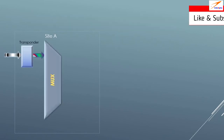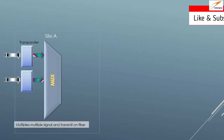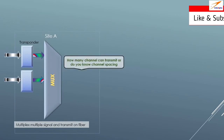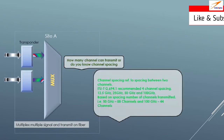After the transponder, the signal goes to a multiplexer. Similarly, we can connect more transponders and send signals to a single multiplexer. A multiplexer's job is to combine all the signals together and transmit on a fiber. The question may ask how many channels can be transmitted and what channel spacing is. Channel spacing refers to the spacing between two channel center frequencies. As per ITU-T G.694.1 standard, DWDM started with 100 GHz channel spacing, transmitting 44 channels, then moved to 50 GHz for 88 channels, and now we use 12.5 GHz channel spacing for flex grid configuration.